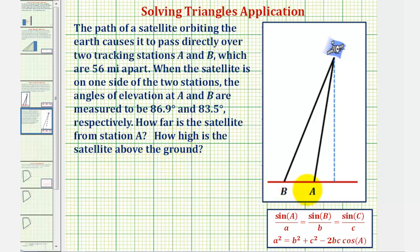Looking at our diagram, the tracking stations are at point A and point B, which are 56 miles apart. Therefore, the length of this segment here is 56 miles.